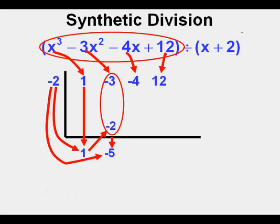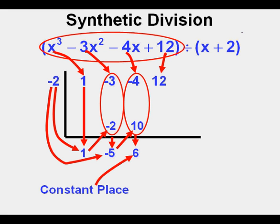Now we take the negative 2 and multiply it by negative 5, which is 10. So 10 goes here within the frame. Then we take the negative 4 and 10 and add them together and place the sum of that addition, 6, below the frame here in the constant or numbers place.